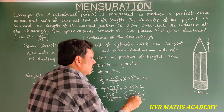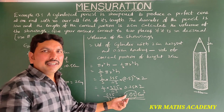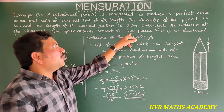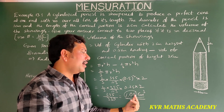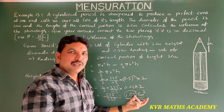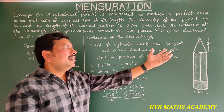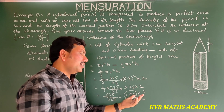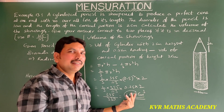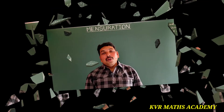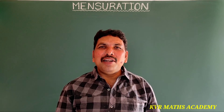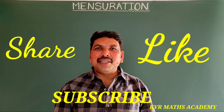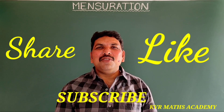The answer is 1.05 because the problem asked to give the answer correct to 2 decimal places. Therefore, volume of the shavings of the pencil is equal to 1.05 cm cubed. If you like my video, please like and share, and don't forget to subscribe. Thank you very much.